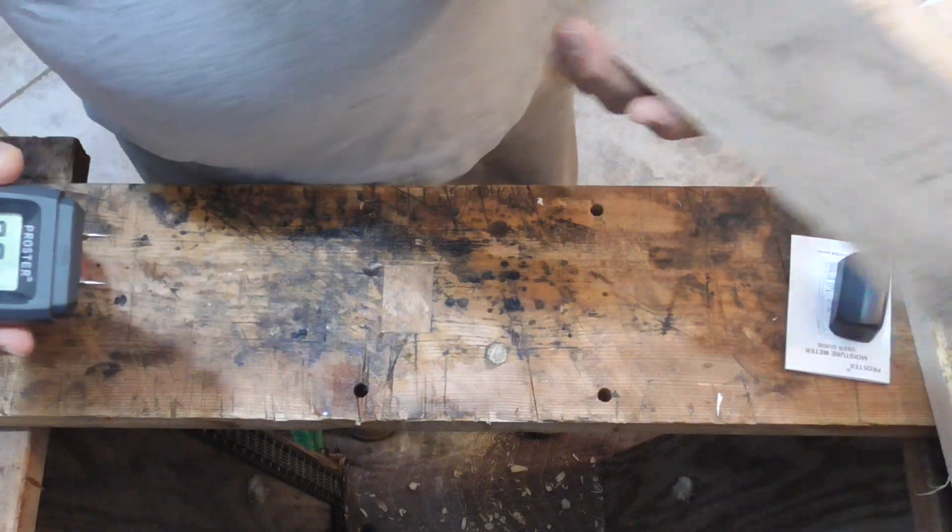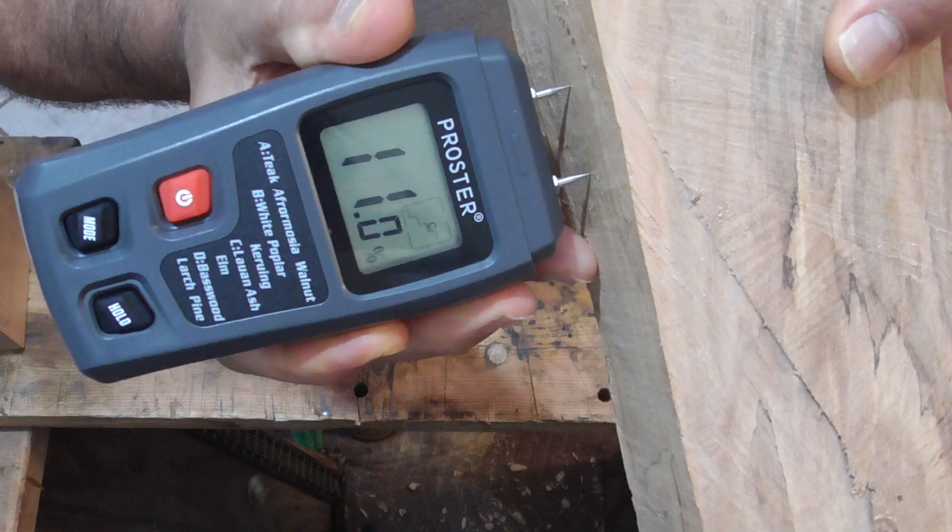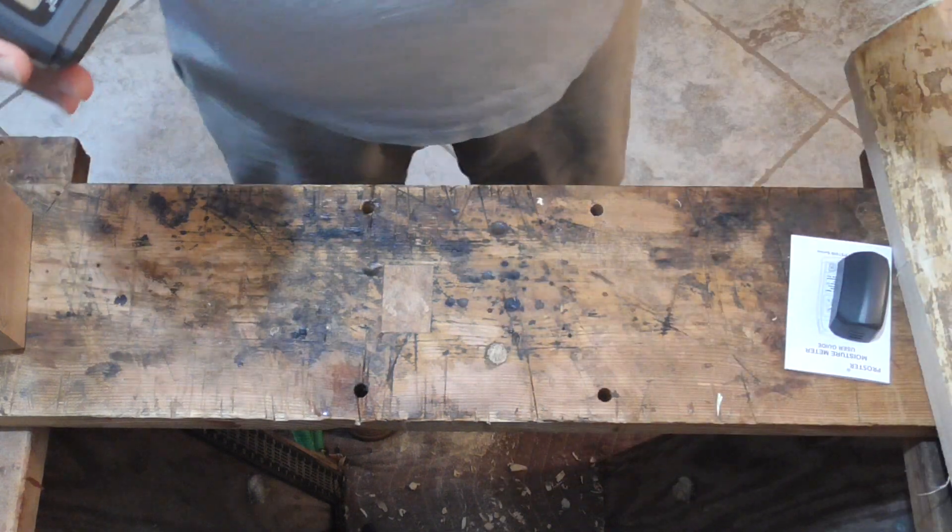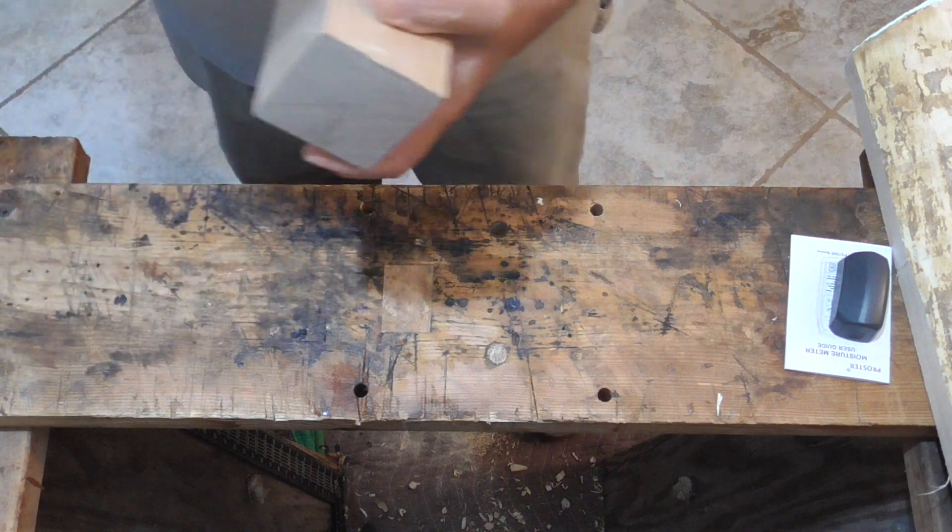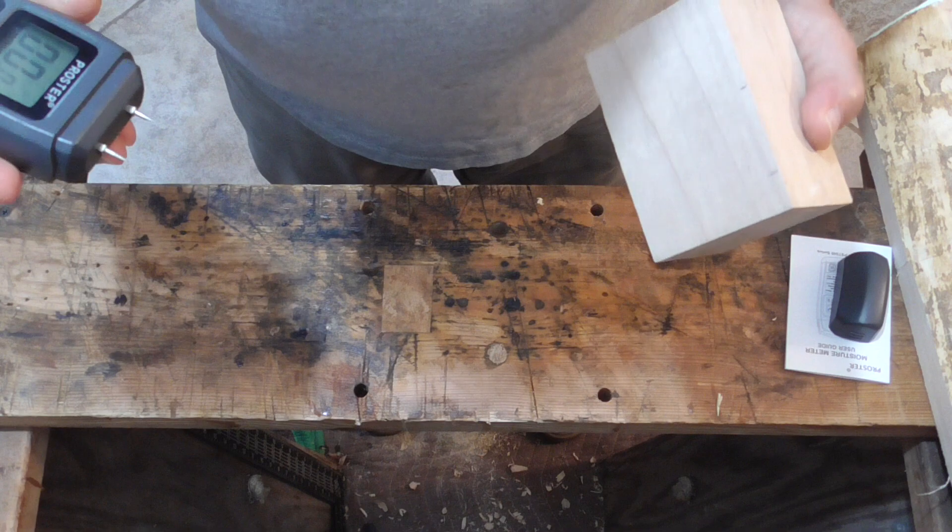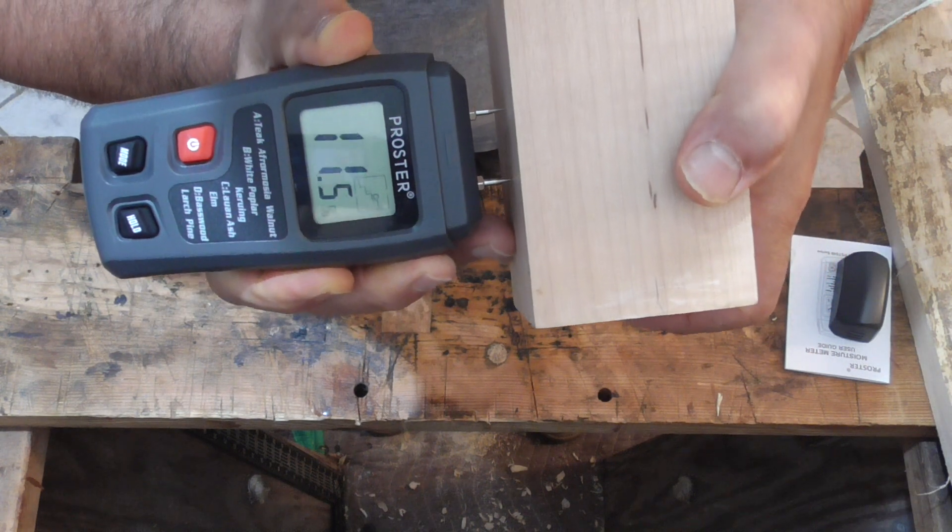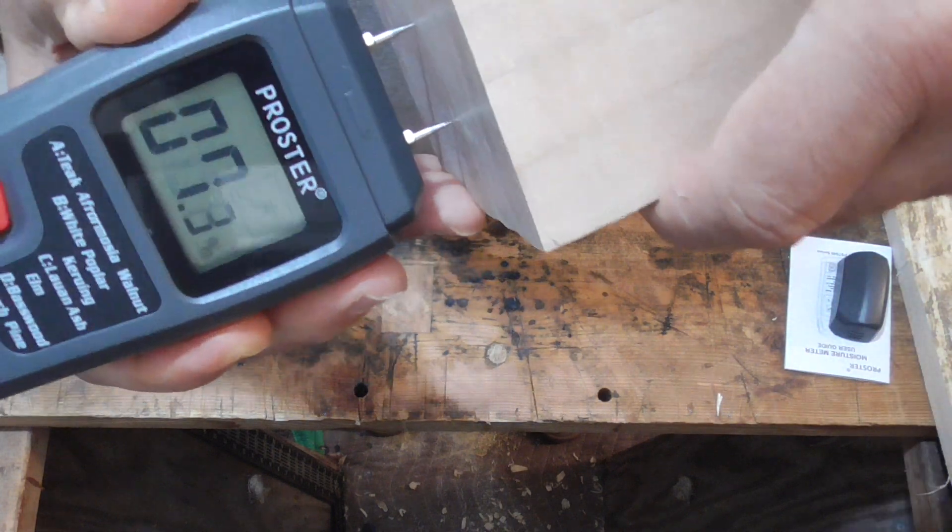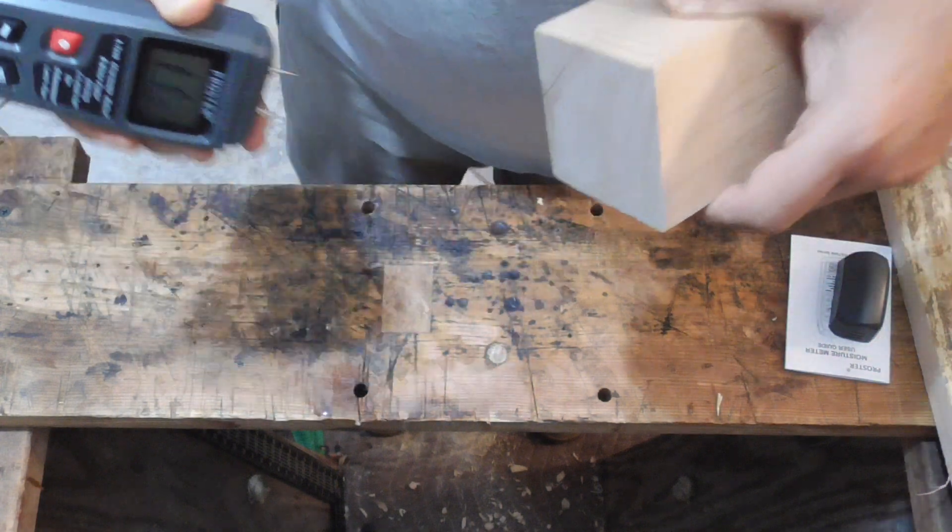Let's test it again. 12.9%. Now we'll go to some maple that was milled in 2016 or 2017. Let's try this. 11.5%. Let's try it from the end this way. Almost exactly the same. Very good.